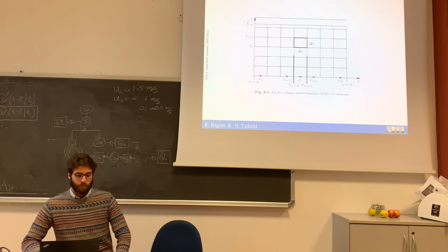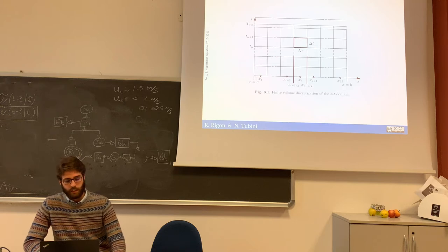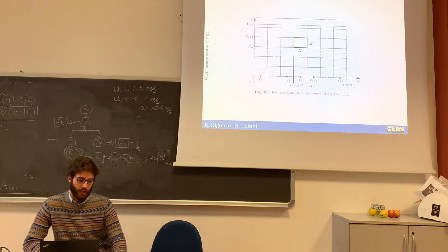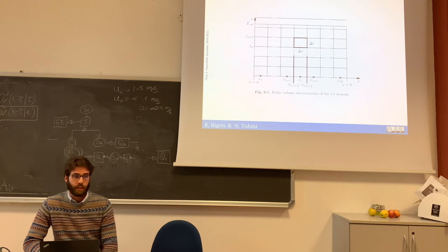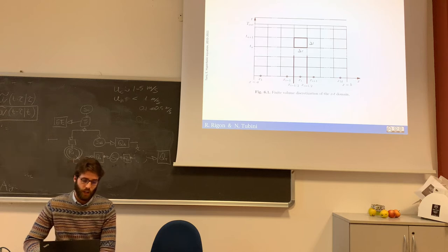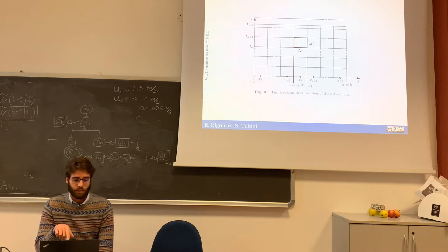To solve the partial differential equation we use a finite volume method. The domain has a space axis and a time axis. We subdivide this continuous domain into finite volume elements, discretizing both space with delta x and time with delta t, then integrate the partial differential equation in each control volume.